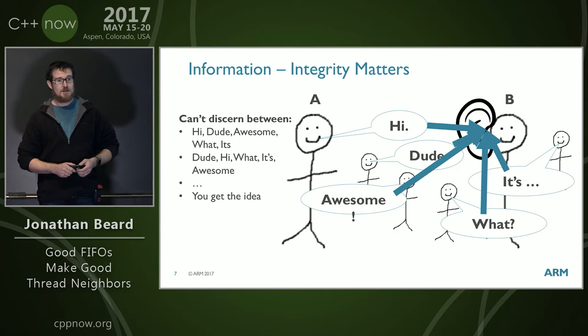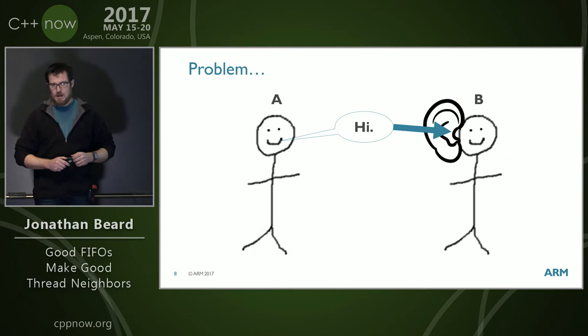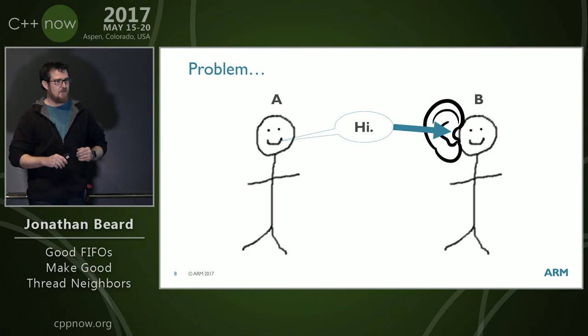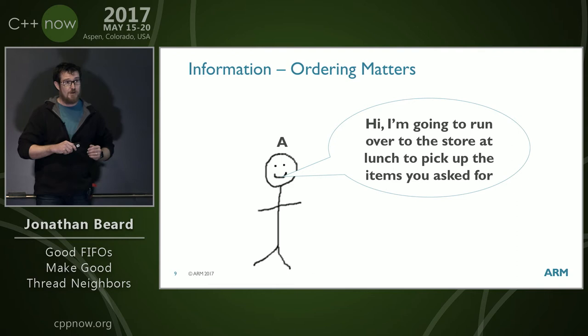The first part about thread communication and FIFOs in general is we have to have integrity. A message sent from A has to be the exact same as the message received at B. It's not just receiving the message. We want to send the message directly to B, and if I want to listen to one person, I block everyone else out and focus. Software unfortunately doesn't necessarily do that.